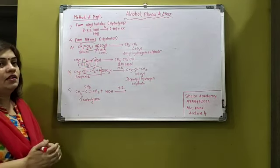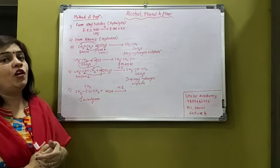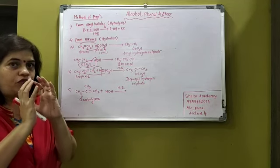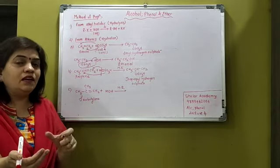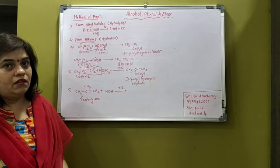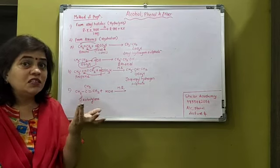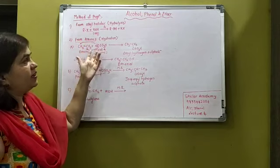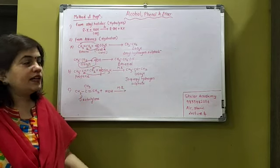So now we go for the next method, that is from alkenes. What is it called as? Hydration. First of all, what do you mean by hydration? It is addition of water across the double bond in the alkene in the presence of acid catalyst. Hydration means adding water, adding water in alkenes where there is a double bond, in the presence of a catalyst. Here the catalyst is H2SO4, sulfuric acid. That is the catalyst.